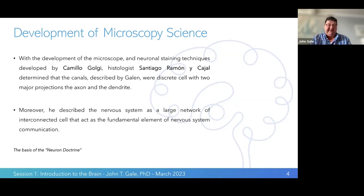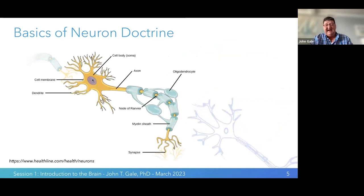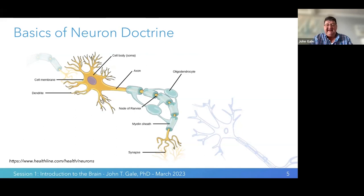This led to the idea that the brain is a large network of interconnected cells — the fundamental communication within the nervous system — essentially what is called the neuronal doctrine. This is a simple schematic of a neuron shown in yellow, with glial cells around it that help myelinate. The two key processes are the dendritic processes, the cell body, and the long projection called the axon, which terminates in the synapse. This is the essential organization of a neuron, though neurons come in many different sizes and configurations.